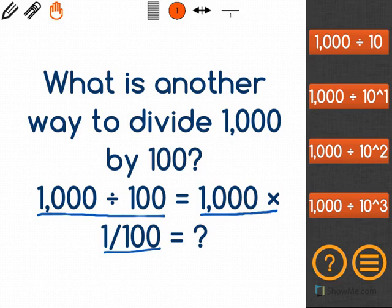Now, our options are exponents, so we know that we're starting with 1,000, and we're trying to find out which exponent equals 100.